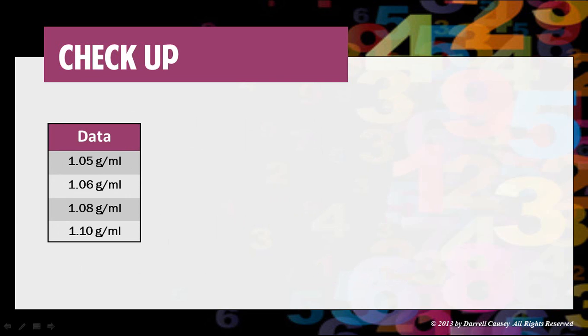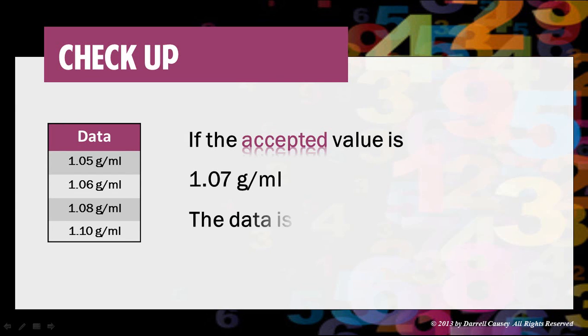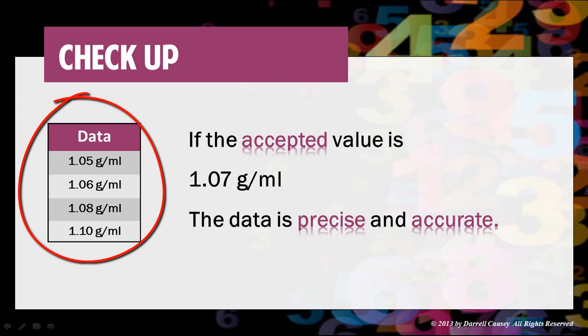Here's our data. If the accepted value is 1.07 grams per milliliter, the data is precise and accurate. Now look at that data. It is precise and accurate. They're all fairly close to each other and within an accepted value of 1.07.